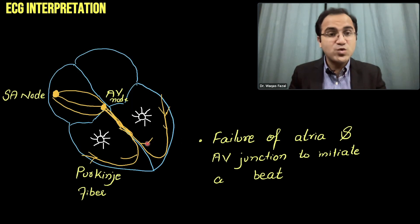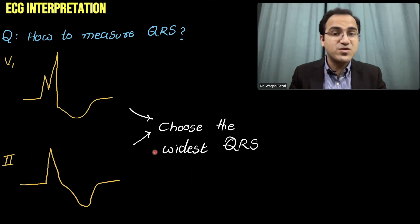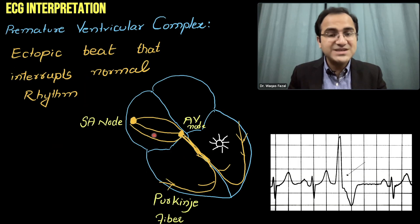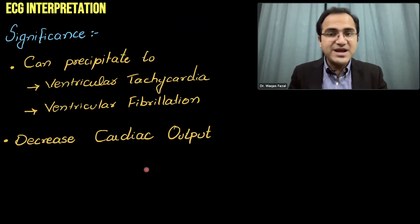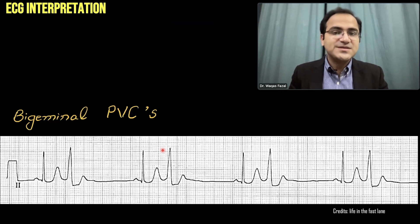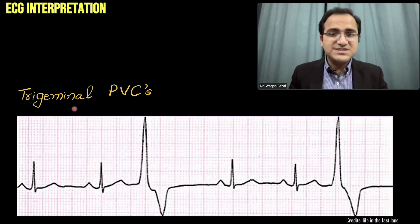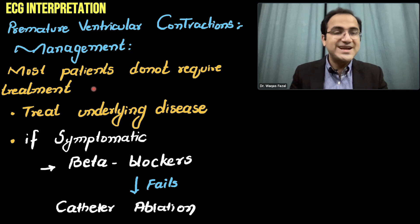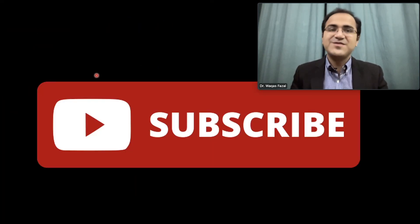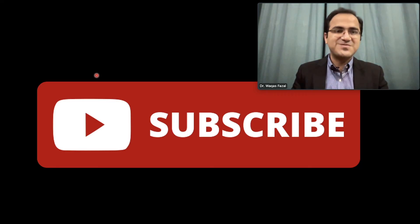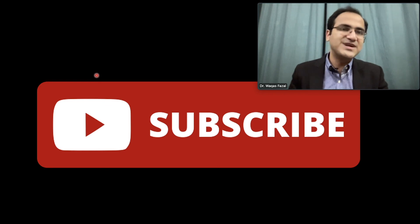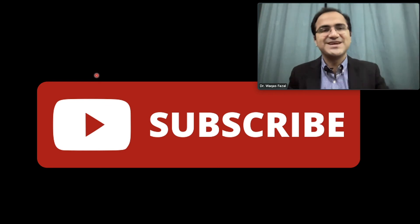In summary, we covered what ventricular rhythm is, the morphology of ventricular rhythms, premature ventricular complexes — their origin, causes, significance — bigeminal PVCs, trigeminal PVCs, quadrigeminal PVCs, PVC couplets, and the management of premature ventricular complexes. Please subscribe and check out the other videos in the ECG interpretation made easy series — the link is in the description below.